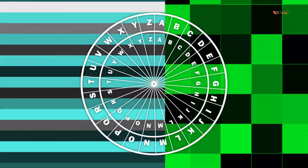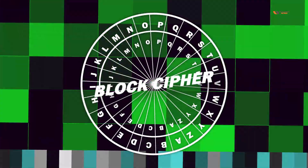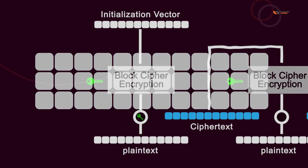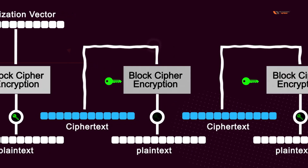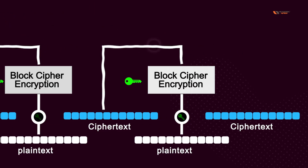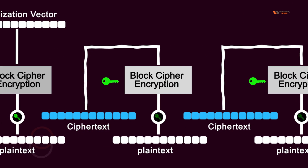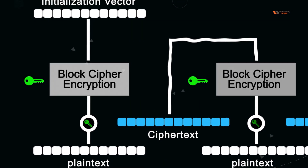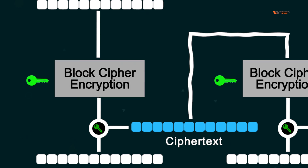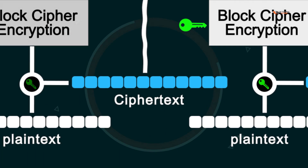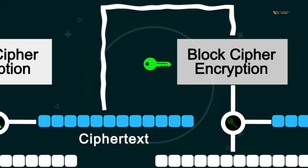Let's discuss both ciphers one by one, starting with block cipher. Block cipher divides the message into smaller, fixed-size chunks, and then they are encrypted individually using the same key. Since it is a symmetric key algorithm, only one key is used. During encryption, plain text is converted into cipher text, and eventually when encryption is done, you combine the individual cipher text blocks.